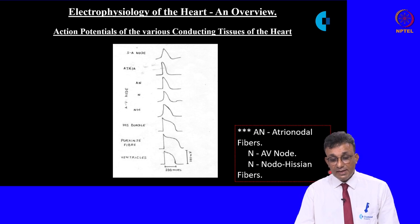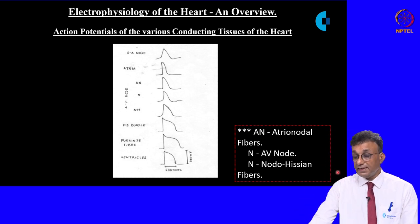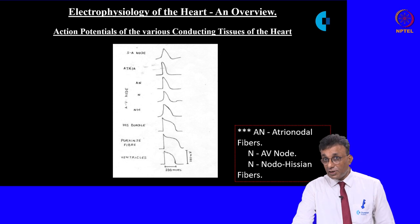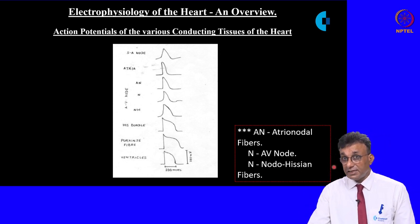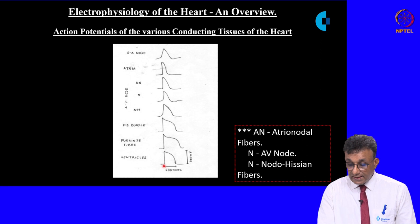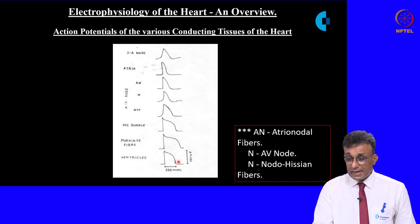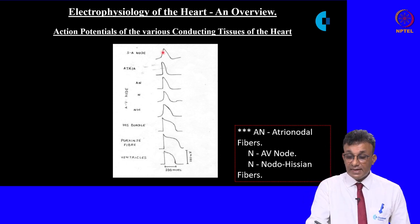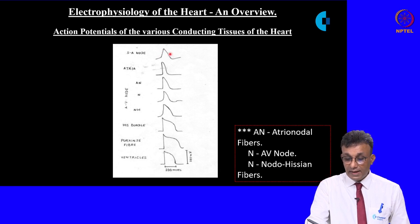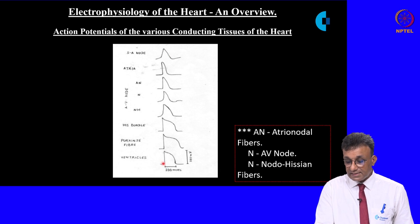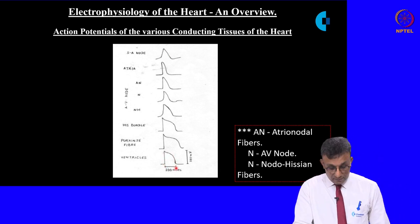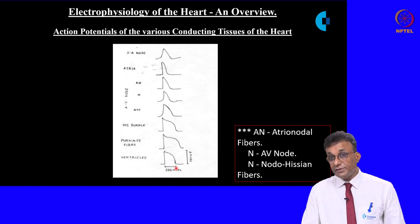This slide shows the action potentials of the various conducting tissues of the heart. When we describe the classical cardiac action potential in physiology, we describe the ventricular action potential with its four phases. However, stimulation of different parts of the conducting system gives different types of waveforms. At the SA node, you have the classical pacemaker potential, which evolves as we go down the conducting system into the classical ventricular action potential.